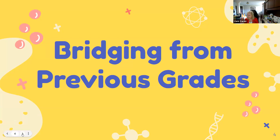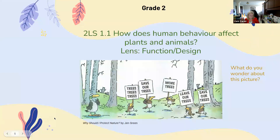Looking at what students have done previously — there's lots of work done in kindergarten and grade one around objects and properties. This unit is really focused on recycling. In a perfect world, if students have gone through K to three in the science program, they will have already done some work around the world of recycling. Here are some slides from grade two to show what that looks like.